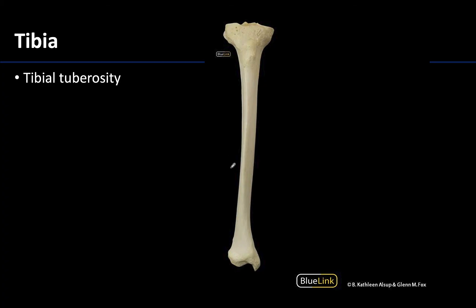The tibia is the medial and weight-bearing bone of the leg. The tibial tuberosity is a mounding of bone on the anterior surface of the tibia, just distal to the articular condyles of the knee joint. If you palpate just below your own kneecap and go slightly inferior, you will feel this tibial tuberosity. This is where the patellar ligament — the continuation of the quadriceps femoris tendon — attaches.